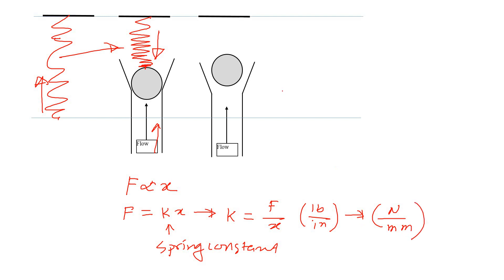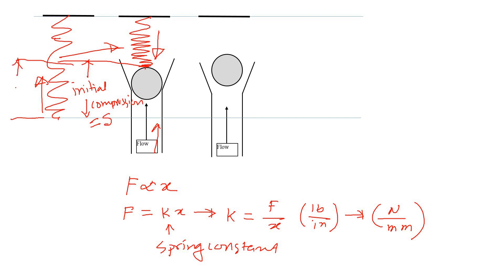That's the spring constant - the amount of force applied. One important term to understand is initial compression. Initially, the spring has to be compressed to apply that force, which is called initial compression. Let's say the compression amount is s. So the force equals k times s (F = ks), which is the force applied here.